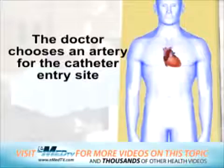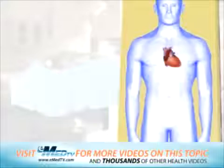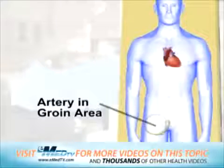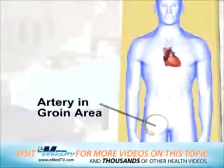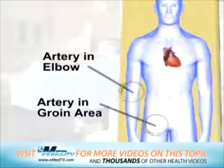To begin a cardiac catheterization with angioplasty, the doctor chooses an artery for the catheter entry site. Most commonly, an artery in the groin area of the leg is used. However, an artery in the bend of the elbow may also be used.